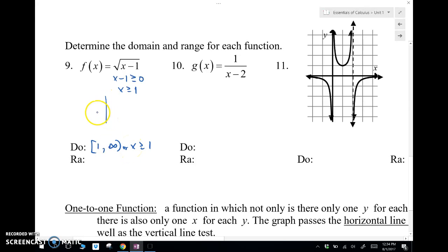Now for the range, we're going to need to graph it. So graphing square root of x minus 1, that's a square root function shifted over like that. So we can see that our y values have to be greater than or equal to zero.